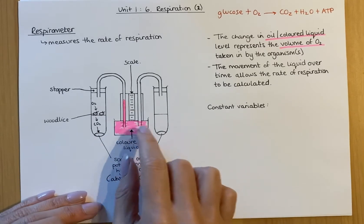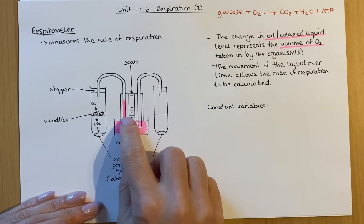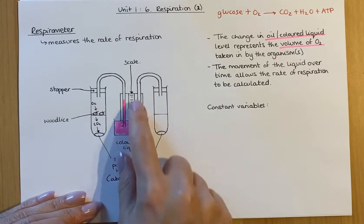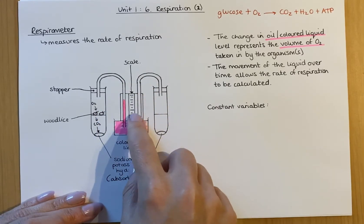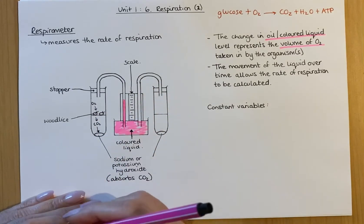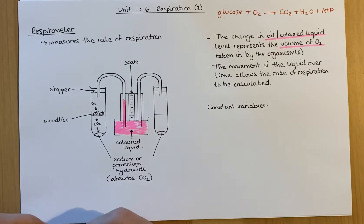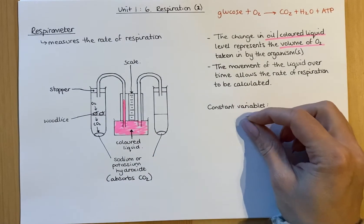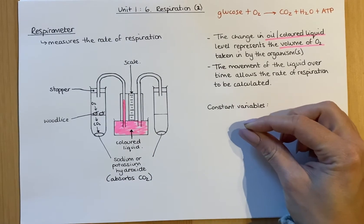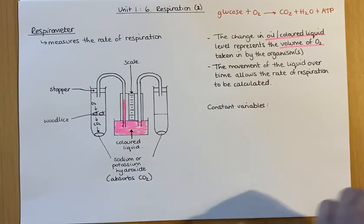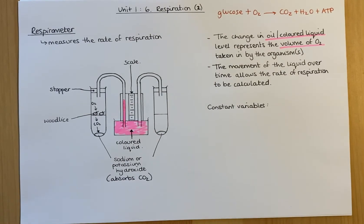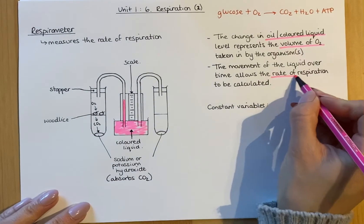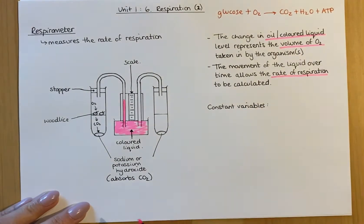Over time, we can measure the change in this liquid level against the scale, and that allows the rate of respiration to be calculated. If you divide how much it's moved over the length of time it's in the tube, you can find out the rate — the speed — and how long it takes to respire.